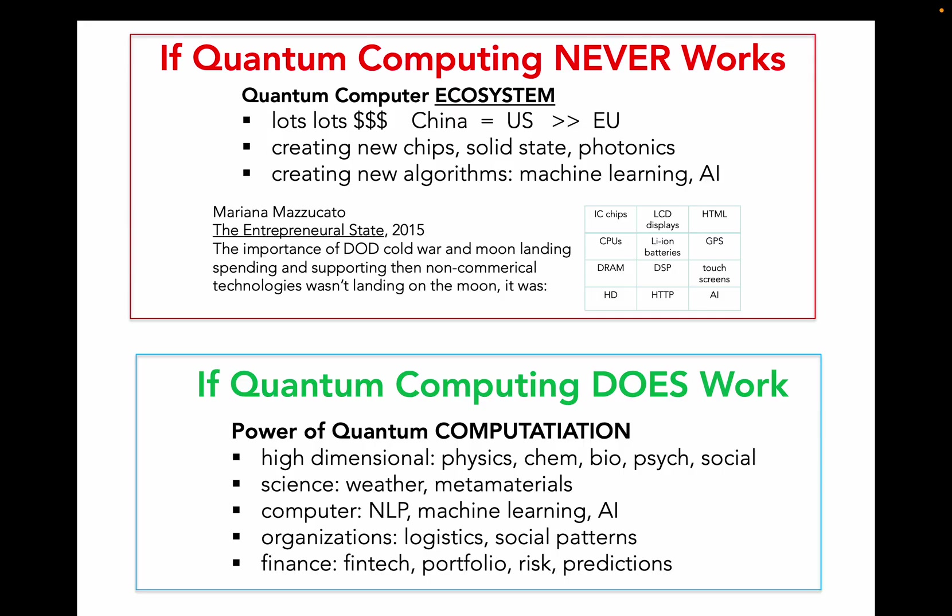But if quantum computing does work, the power of quantum computation will be able to do many things, to deal with many high dimensional problems in physics, chemistry, biology, psychology, sociology, to make much better predictions in terms of weather and designing metamaterials. In terms of computer science, to do natural language processing and machine learning and AI in much more powerful ways. In organizations, to maximize logistics and social patterns of very complex systems. And in finance, make much better predictions about portfolio management and risk predictions. Thank you.